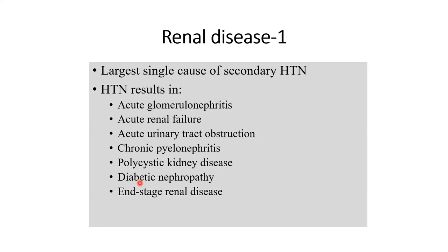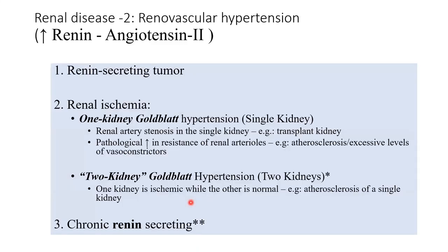Type 2 diabetes is largely lifestyle-driven. Once it sets itself in a person, the kidney goes, the cardiovascular system is affected because it triggers hypertension, and end-stage renal disease is the last station in this sad saga, after which hypertension becomes a raging problem.